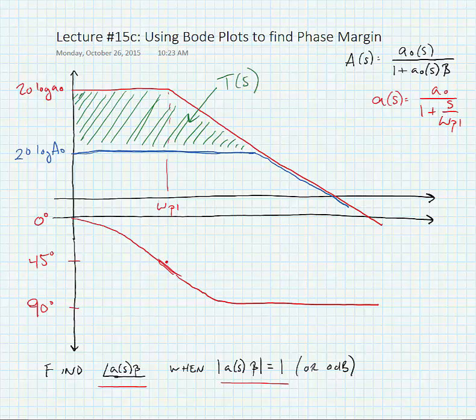We can find the low frequency loop gain is 1 plus a₀ times β. But the loop gain as a function of frequency, that's the difference between the two curves, the red curve and the blue curve.